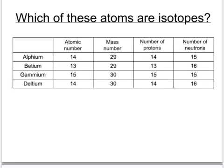Now, to be isotopes, the atoms have to be of the same element, so they must have the same atomic number. And in this case, there are only two of them with the same atomic number. We've got alphium and we've got deltium, both with the same atomic number, so they're the same element.